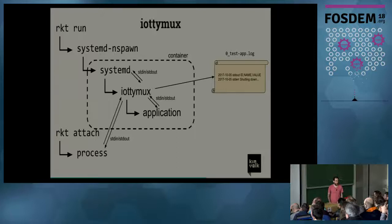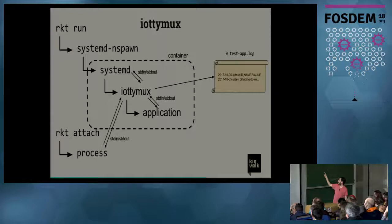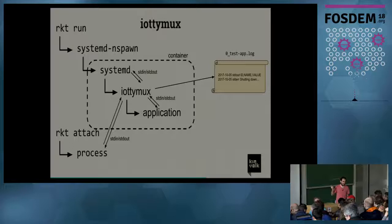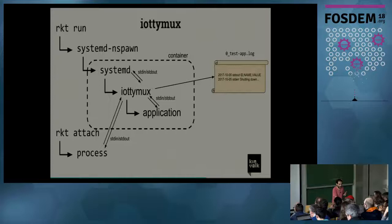Here's the diagram of how iottymux works. You have systemd inside the container that starts the iottymux component, and the application's output is connected to iottymux, which writes it to a file. The CRI log format is simplified — just the stream type and then the log line. This also allows us to attach to the input and output of the application, which was not possible before, enabling something like Rocket Attach. Those were the most difficult parts when integrating Rocket with Kubernetes.